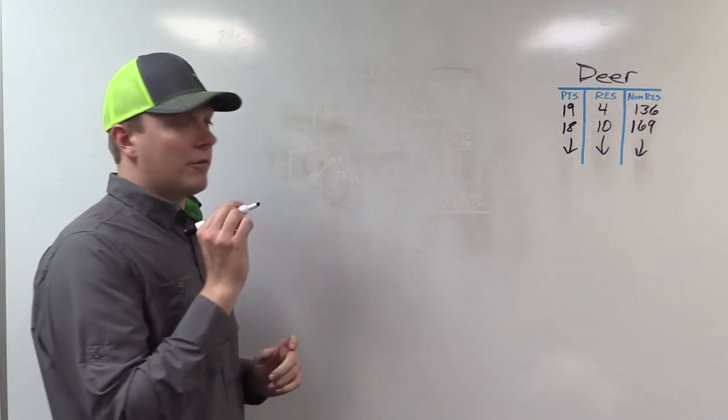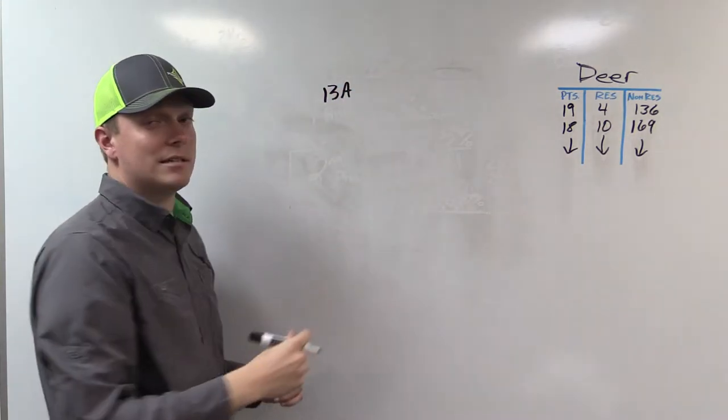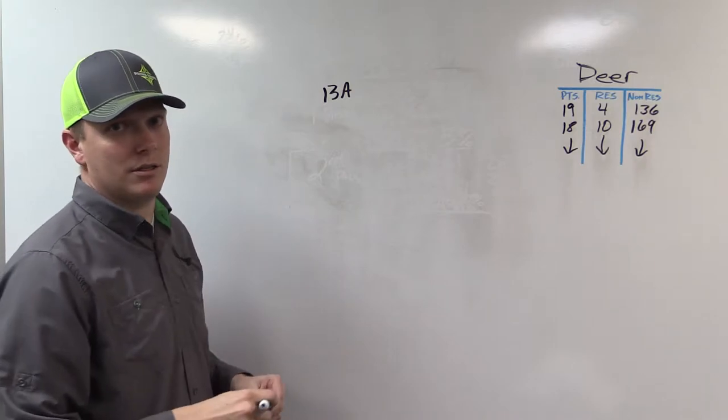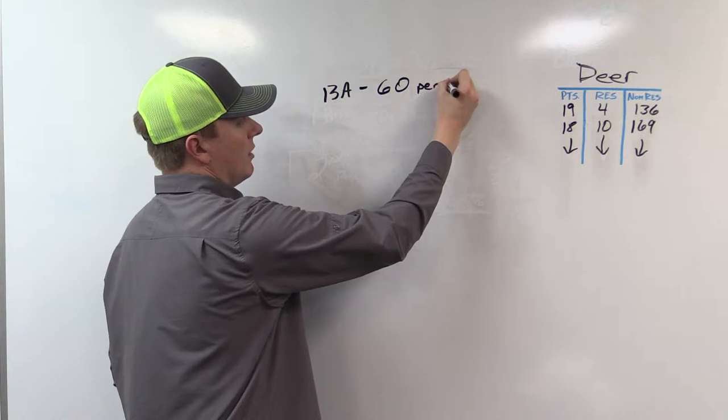Okay, so for this year, 13A, which is the east side of the strip, the second class unit compared to 13B, 13A, there are 60 permits total available.